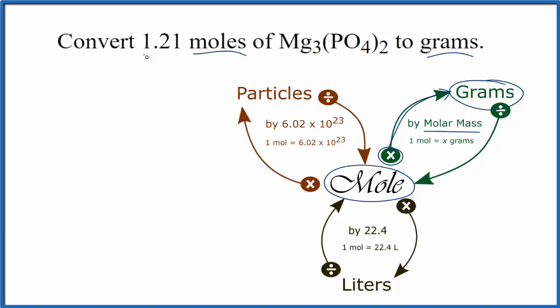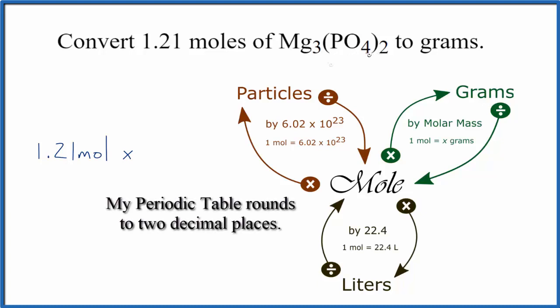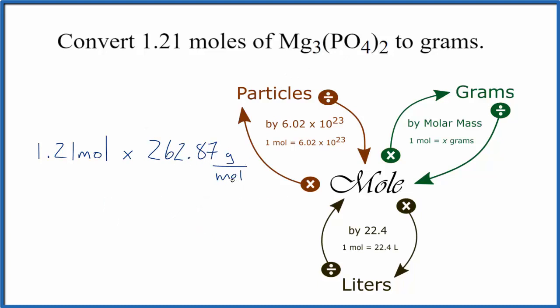So we have 1.21 moles, and we multiply that by the molar mass of Mg3(PO4)2, which is 262.87 grams per mole. That's the unit for molar mass, grams per mole.